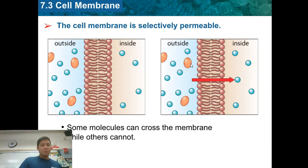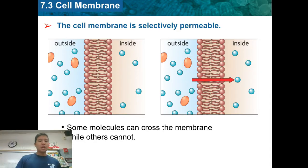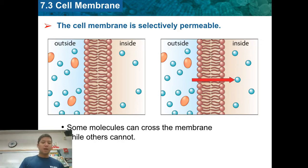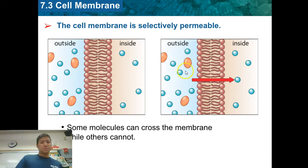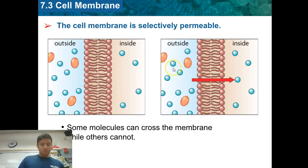Large molecules need the help of a protein — a channel protein — to go through the plasma membrane. Also, if something is small but has a positive or negative charge, it's also not going to be able to go through the plasma membrane on its own.